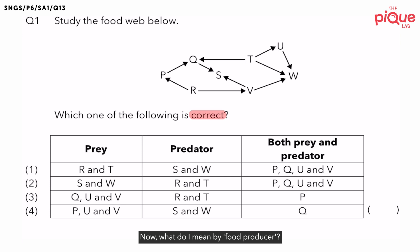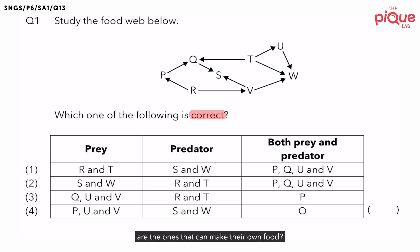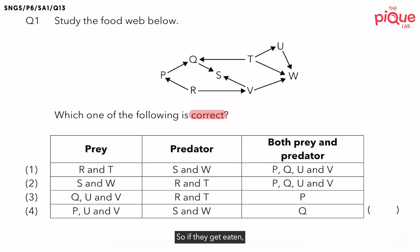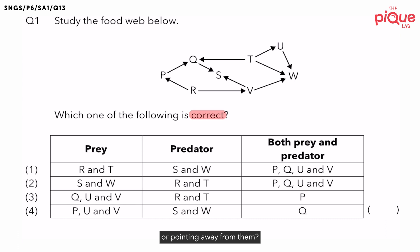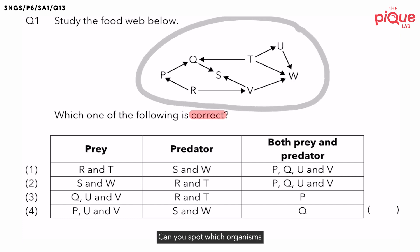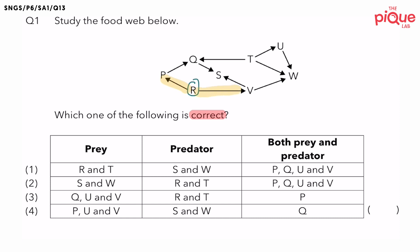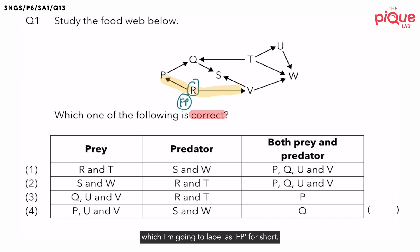Now, what do I mean by food producer? A food producer is an organism that makes food — basically, which group of organisms can make their own food? We call them plants. And remember, if plants make their own food, they will get eaten, not eat other organisms. So if they get eaten, there would only be arrows pointing away from them. Looking at this food web, R is a food producer — you can see the arrows pointing away from it — so I'm going to label it FP for short.